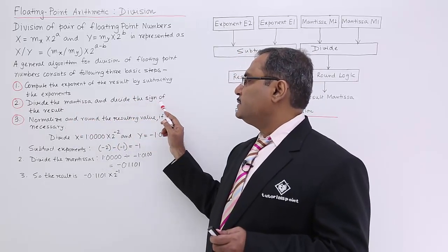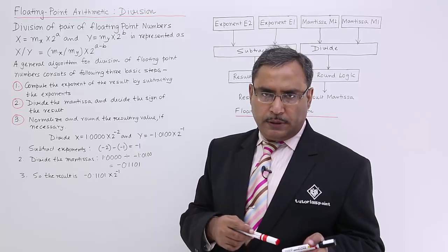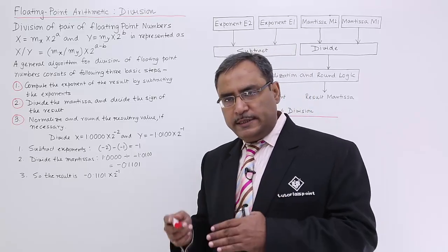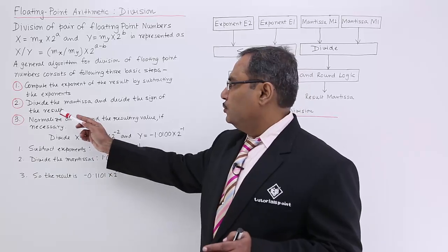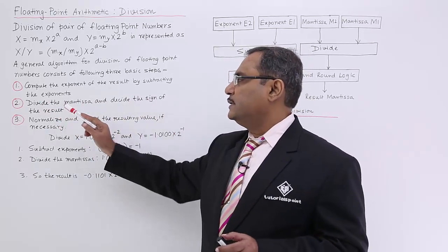Divide the mantissa and decide the sign of the result. So positive, positive, positive. If one is positive, another one is negative, then negative. So divide the mantissa and decide the sign of the result.